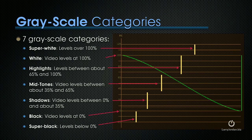White levels are levels that are exactly at 100%, where the top of that green line is. Highlights are levels between about 65 and 100% — the lighter portions of the image. Mid-tones, also called mids and mid-grays, are video levels between about 35 and 65%. Shadows, also called the blacks, are video levels between 0% and 35%. At zero is black, where the video level is 0%. Blacks are as dark as any of your colors can go. Below that is super black, which are levels below zero — super blacks can extend down to negative 20, and super whites go to about 109%. You don't want levels over 100%, and you don't want levels below 0%. One of the things we do in color correction is to make sure our white levels don't exceed 100% and our black levels don't go below 0%.